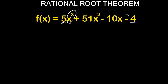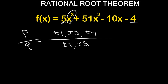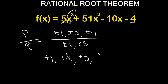Now I'll create my factors. For p over q, doing factors of my constant negative 4, I get plus or minus 1, plus or minus 2, and plus or minus 4. For factors of my leading coefficient 5, I get plus or minus 1 and plus or minus 5. Dividing these out: 1 divided by 1 gives plus or minus 1; 1 divided by 5 gives plus or minus 1 over 5; 2 divided by 1 gives plus or minus 2; 2 divided by 5 gives plus or minus 2 over 5; 4 divided by 1 gives plus or minus 4; and 4 divided by 5 gives plus or minus 4 over 5.